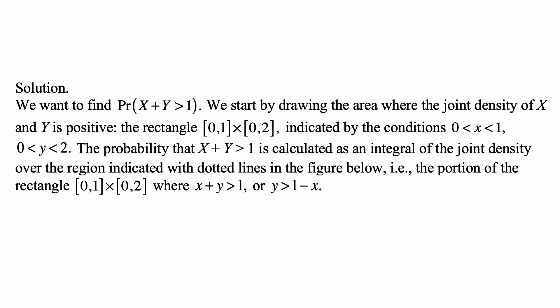And then we find the probability that x plus y is more than 1 as an integral of the joint density over the region where x plus y is more than 1. That's the same as saying that y is more than 1 minus x, but only the portion within the rectangle created by the conditions that x is between 0 and 1 and y is between 0 and 2.